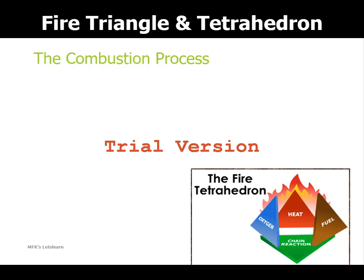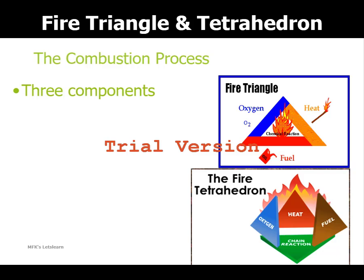Fire is a chain reaction. For combustion to continue, there must be a constant source of fuel, oxygen, or heat. These three components are called the fire triangle. If one of these is not present, the fire cannot start. If one of these is taken away from the fire, it will go out — that is called fire suppression.